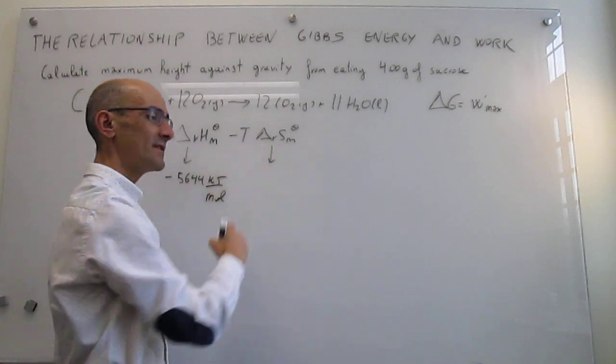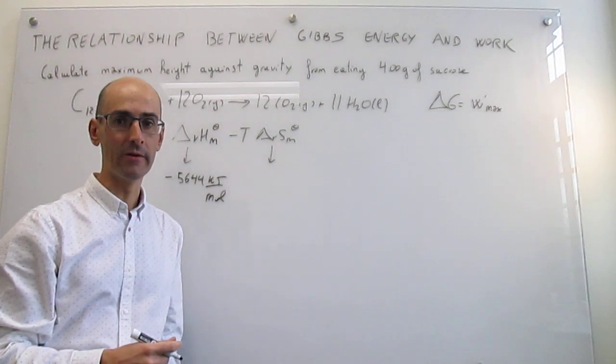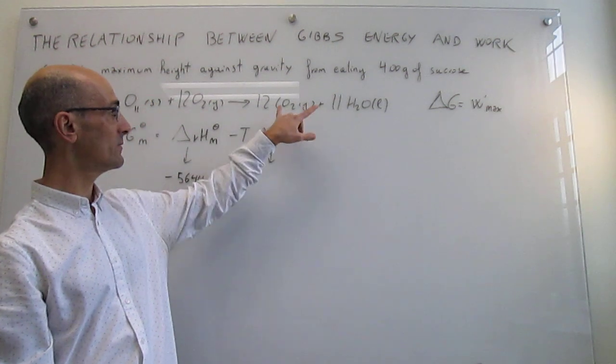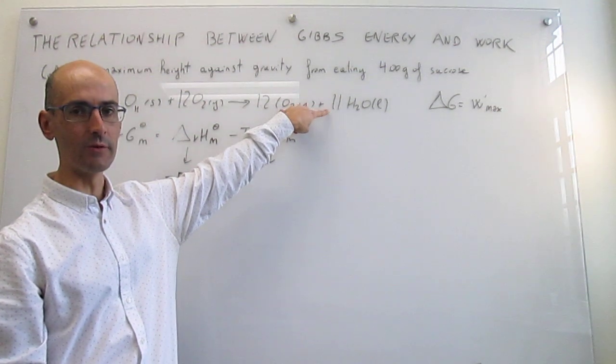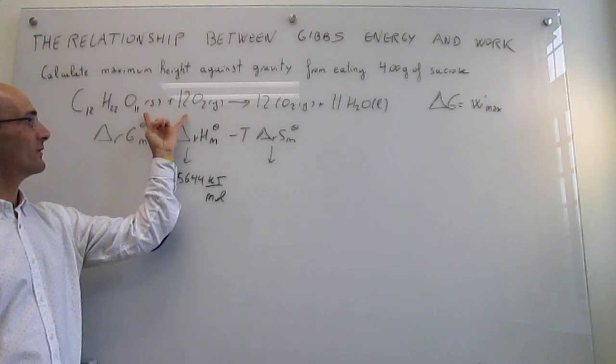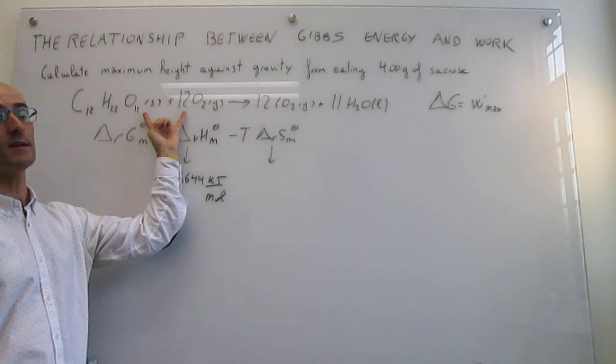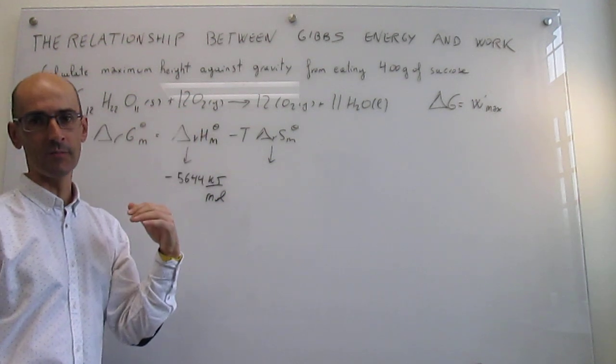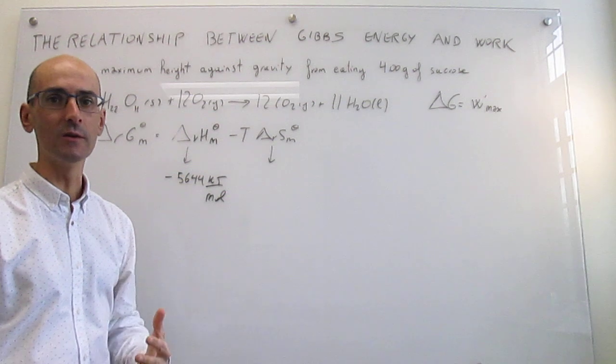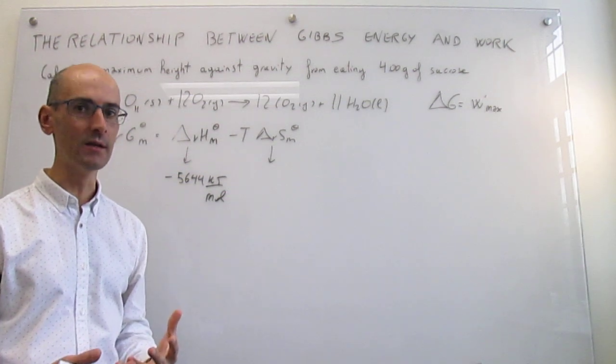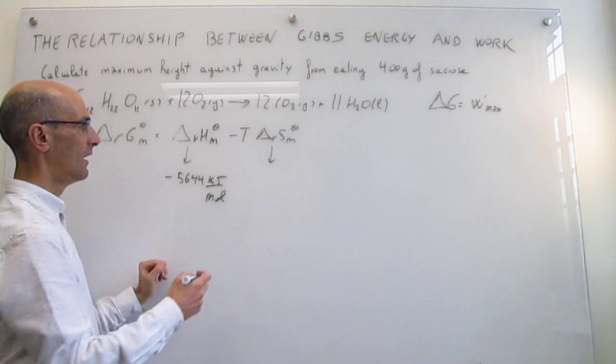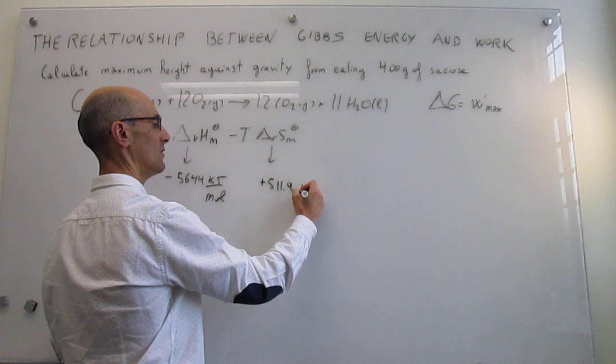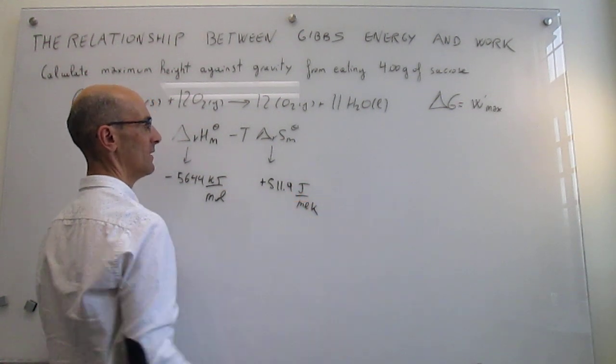For the change in entropy, what you would do is take the absolute molar entropies for products multiplied by the stoichiometric coefficients and then subtract the absolute molar entropies for reagents multiplied by the stoichiometric coefficients, which are 12 and 1. Remember that in the case of oxygen you have a non-zero value because this is an absolute molar entropy, not the enthalpy of formation. This happens to be plus 511.9 joules per mole Kelvin.